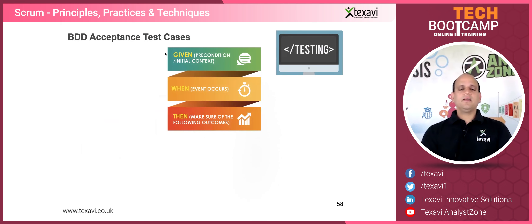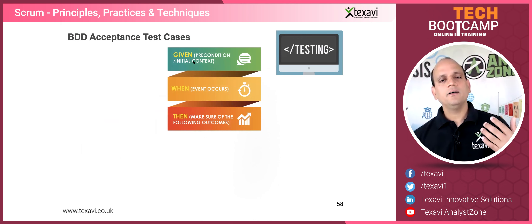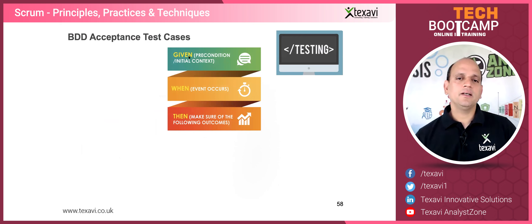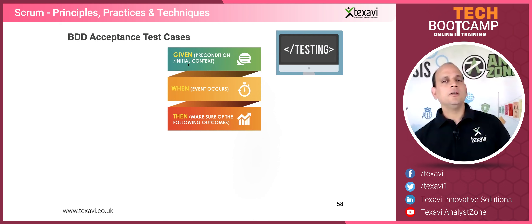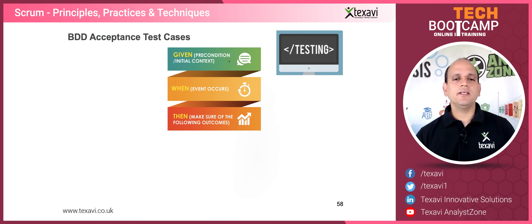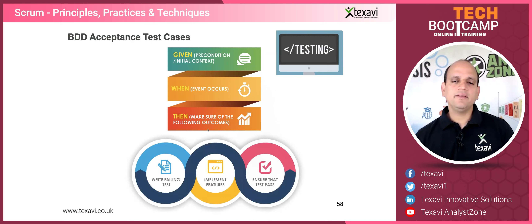We also discussed BDD acceptance test cases, or Gherkin statements — Given, When, and Then. This is how test cases are written. Tools like Selenium accept this kind of test case. It's written in plain, natural English, so you don't need to know complex syntax. Given a context, when this event occurs, then the expected behavior is this — that's the Given-When-Then format used to write test cases.